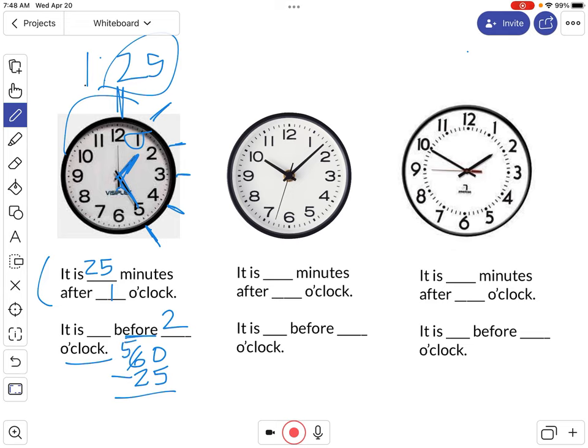regrouping here, make that a 10. 10 minus 5 is 5. 5 minus 2 is 3. It's 35 minutes before the next hour. And you can see that right here that if we start at that one and go 5, 10, 15, 20, 25, 30, 35, after the minute hand moves another 35 minutes, it will be 2 o'clock. If you need another example, keep watching.